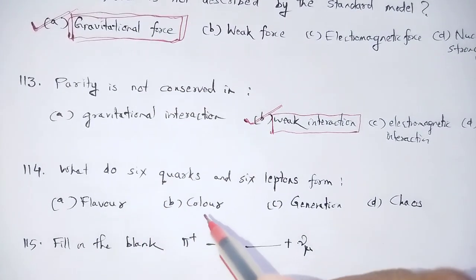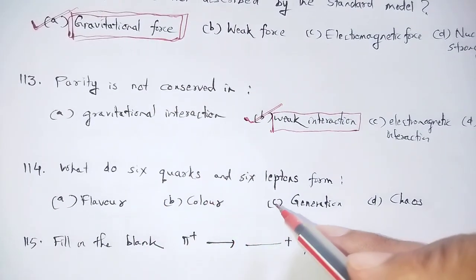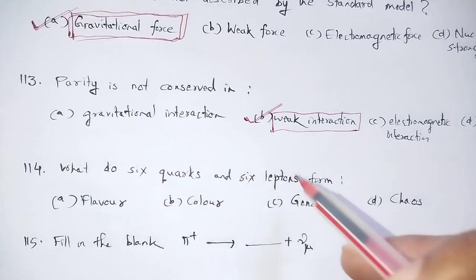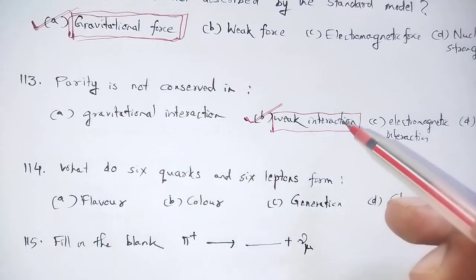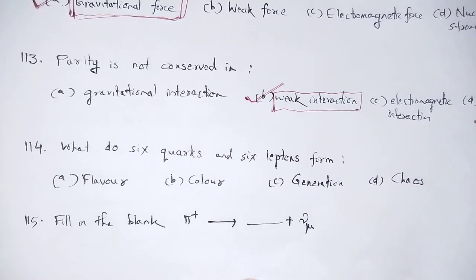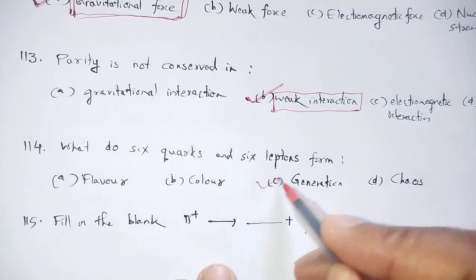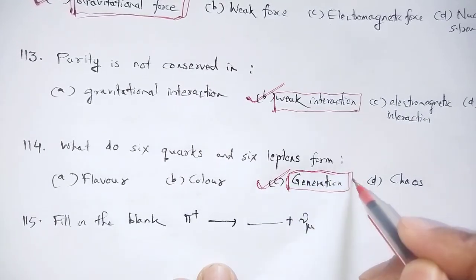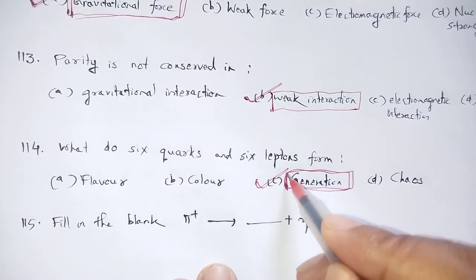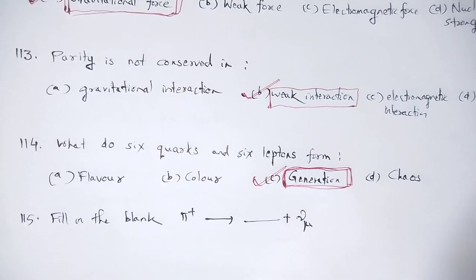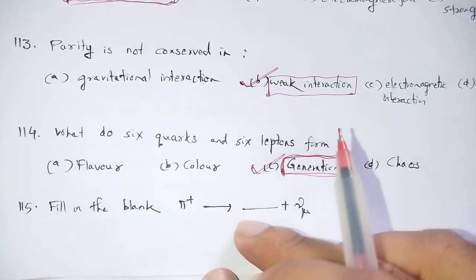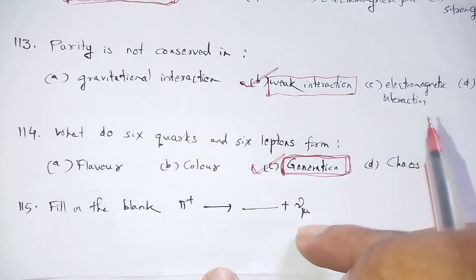What do six quarks and six leptons form? Options: flowers, color, generation, cows. Six quarks and six leptons together form generations. Fill in the blank: pi-plus gives rise to a mu-neutrino.